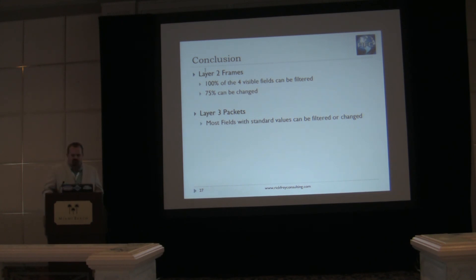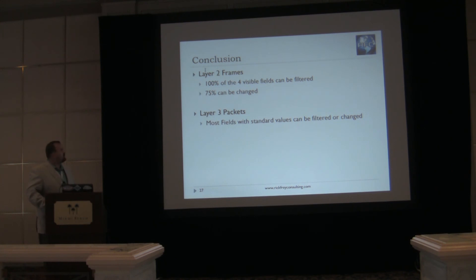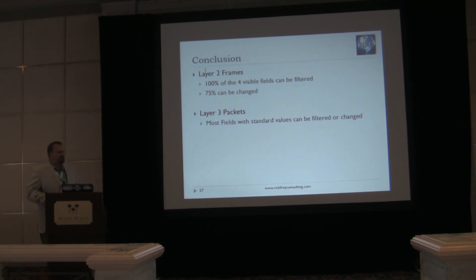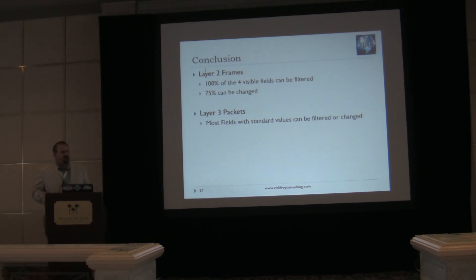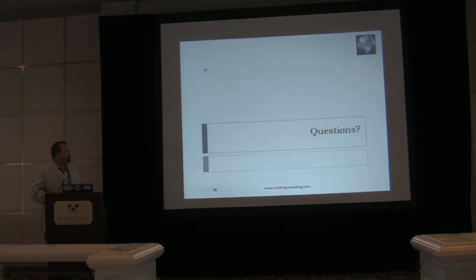In conclusion, if we want to directly manipulate a packet with a MicroTik router, there are four fields in the Layer 2 frame that are visible to us and that we can filter against — 100% of them are filterable, and 75% of those can be changed. With Layer 3 packets, most of the fields we'd normally be interested in filtering, we can. It's only fields that are either auto-generated like a checksum, or that wouldn't have good value for us, that we can't filter against. Unfortunately, it's only a small number of those that we can change at the Layer 3 level. That's the end of the presentation — does anybody have any questions?